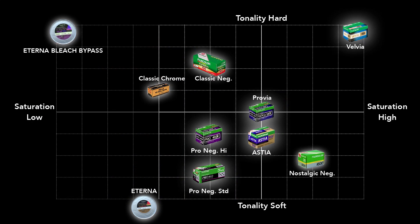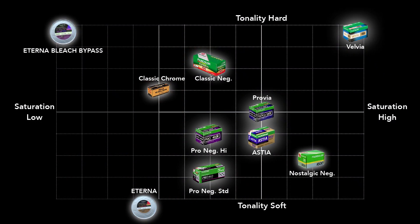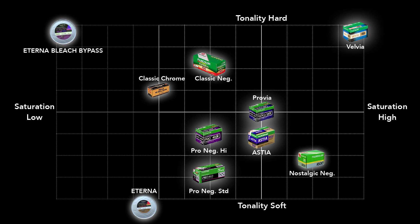This chart represents our film simulations and where they sit between saturation and tonality — basically contrast. This chart is your starting point for which you base your film simulations off of. For example, Velvia is a very saturated, contrasty film simulation, so anything you do on top of that as far as increasing shadow or highlight tones will create that effect even greater. If you're looking for a very flat profile, you might stick with Eterna and add a little saturation, or if you like the tonality of Classic Neg, you could reduce the highlights or increase the shadows.